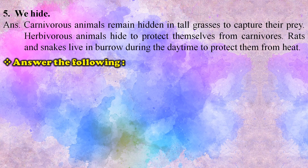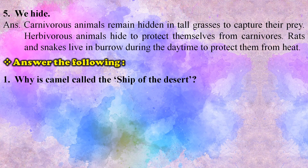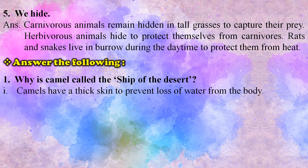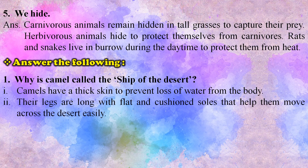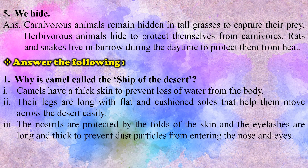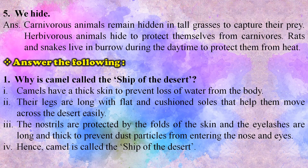Answer the following. First, why is camel called the ship of the desert? Camels have a thick skin to prevent loss of water from the body. Their legs are long with flat and cushioned soles that help them move across the desert easily. The nostrils are protected by the folds of the skin and the eyelashes are long and thick to prevent dust particles from entering the nose and eyes. Hence, camel is called the ship of the desert.